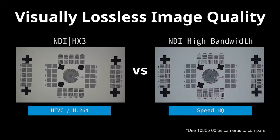NDI high-bandwidth uses an image compression algorithm that has been around for more than 10 years. NDI-HX3 uses a newer generation of compression technology that produces truly excellent results.